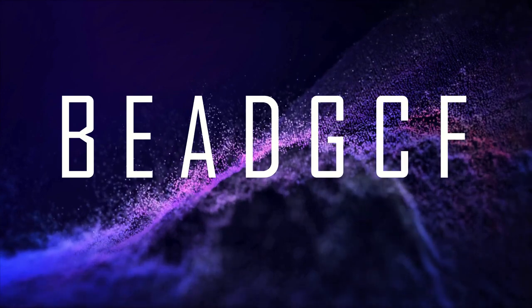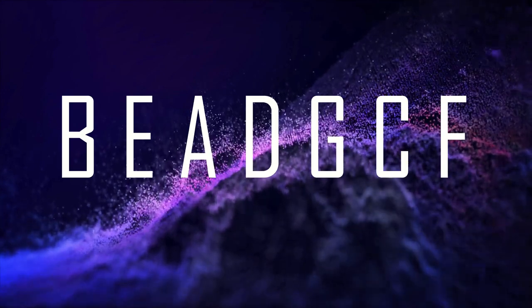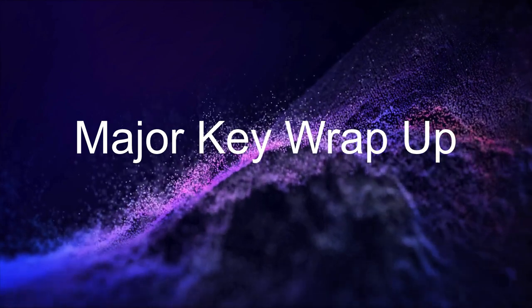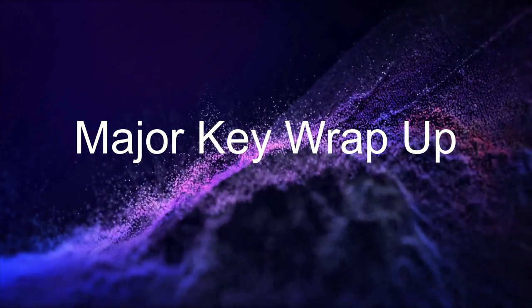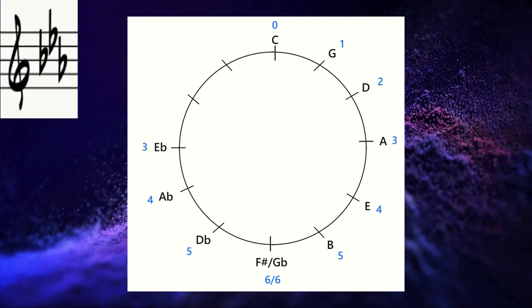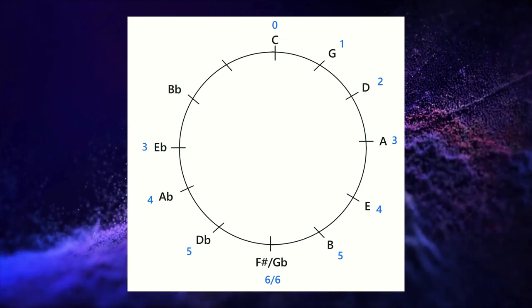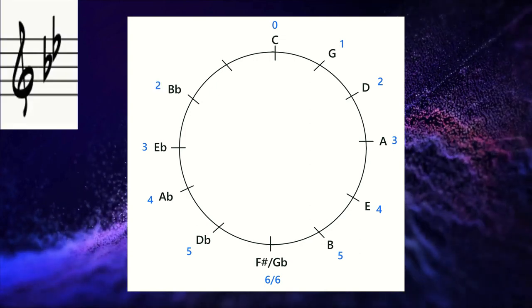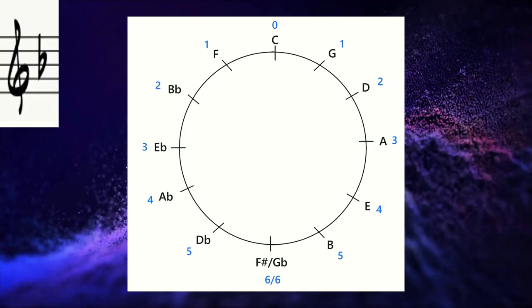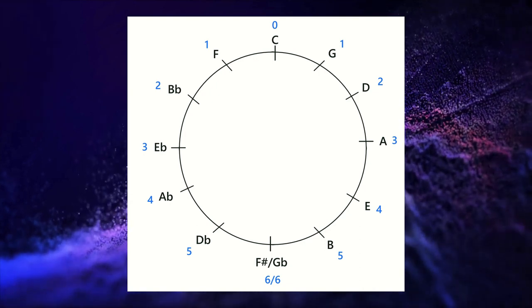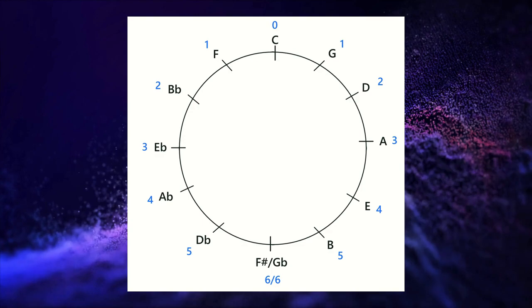Okay, so let's wrap up the major keys here. We have E flat with three flats, B flat with two flats, and the key of F with one flat. So we just follow the same rules that we had and this brings us full circle with the major keys.